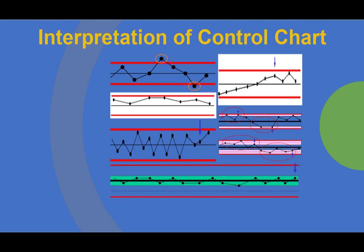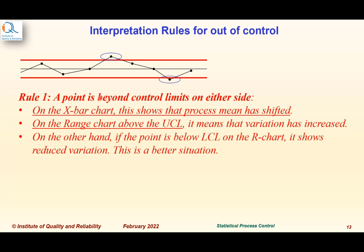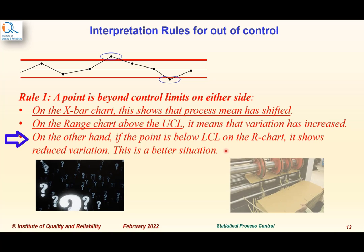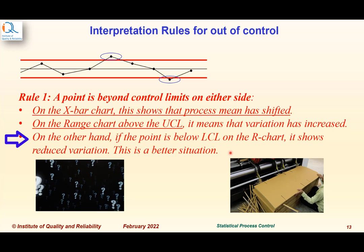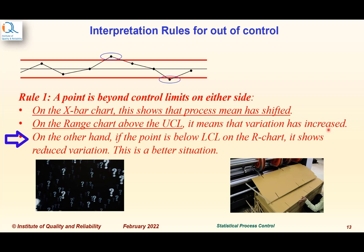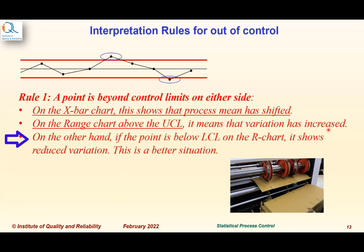Let us understand the various interpretation rules to detect out-of-control points. Rule 1: a point beyond control limits on either side on any control chart. On the X-bar chart, this shows the process mean has shifted. On the range chart, a point above the upper control limit means variation has increased; a point below the LCL means reduced variation, which may be a better situation. We must still investigate the reason — if it is an improvement, standardize it; if it is deterioration, take corrective action so it does not recur.